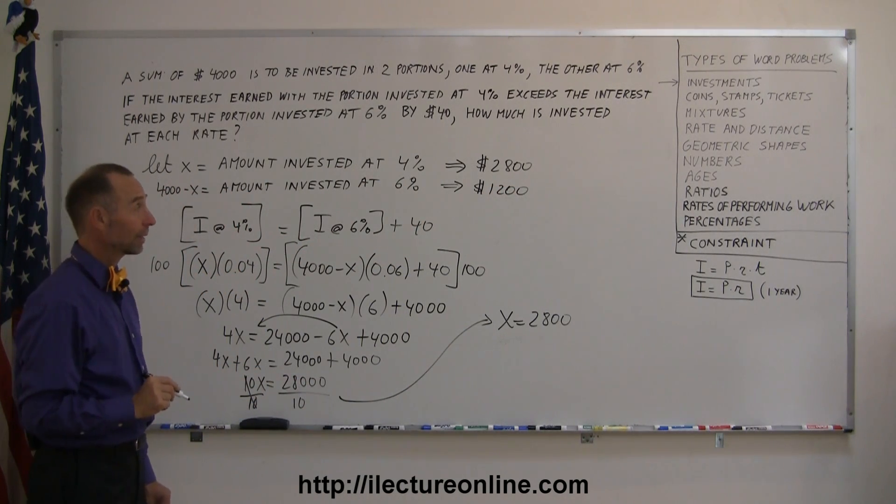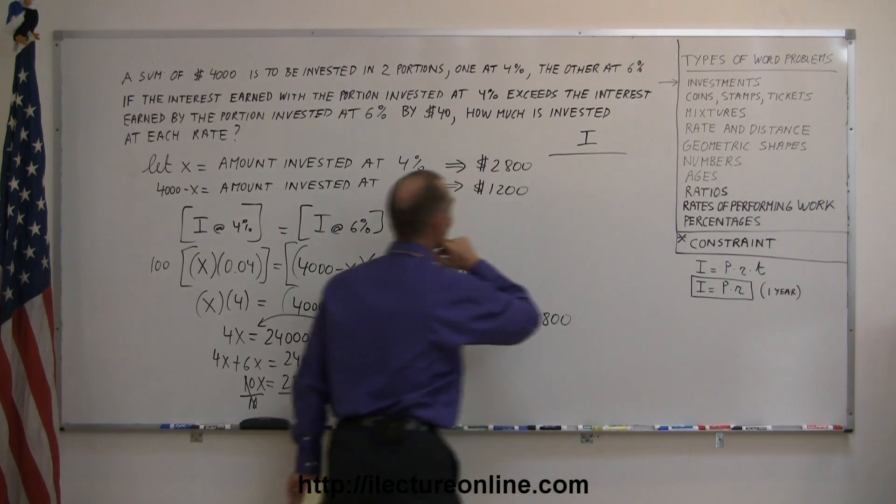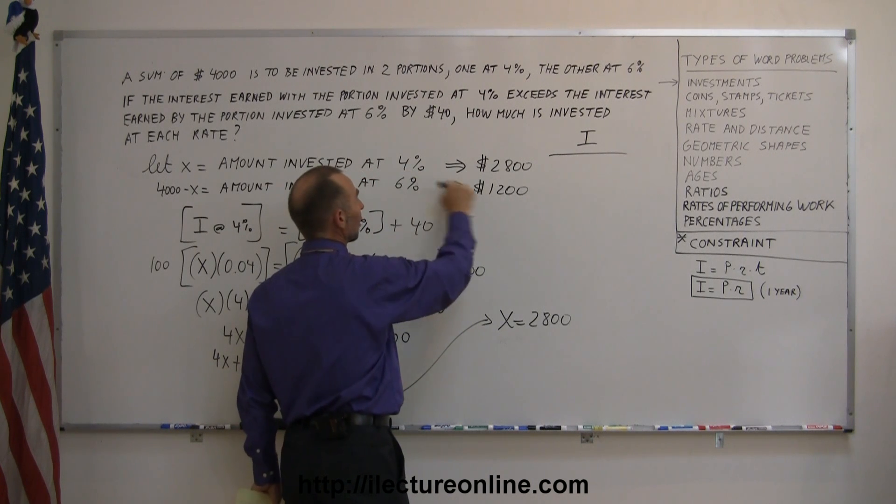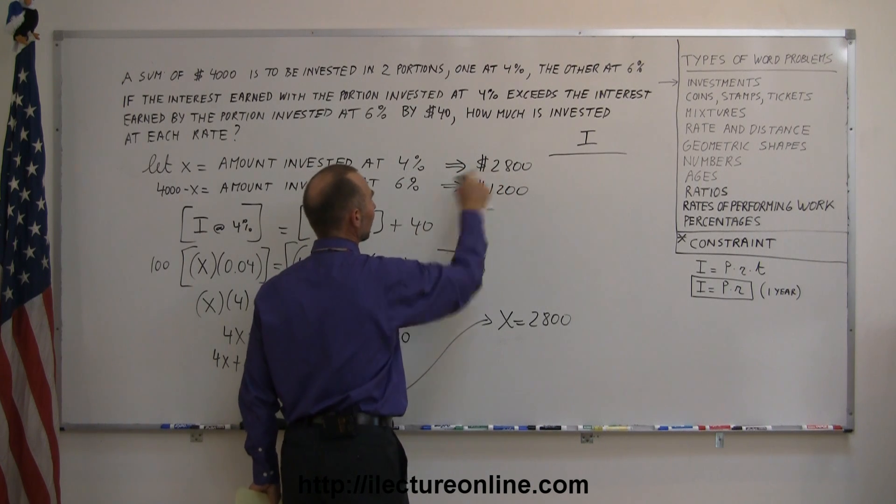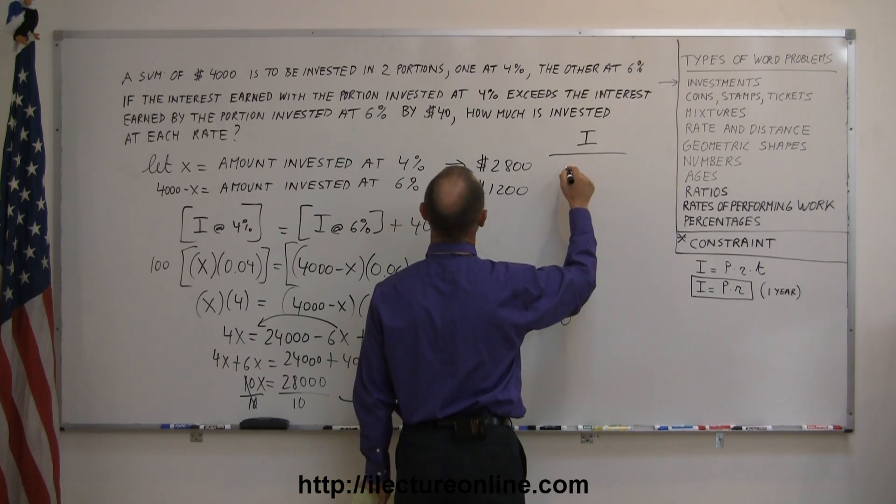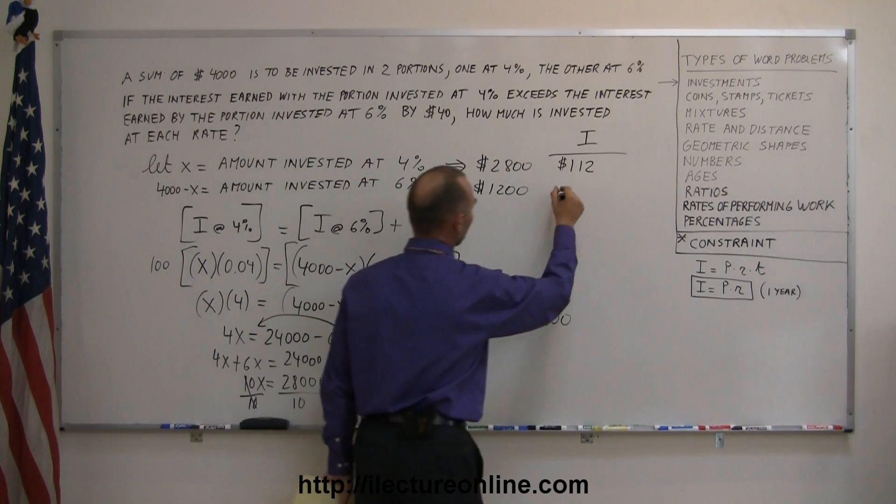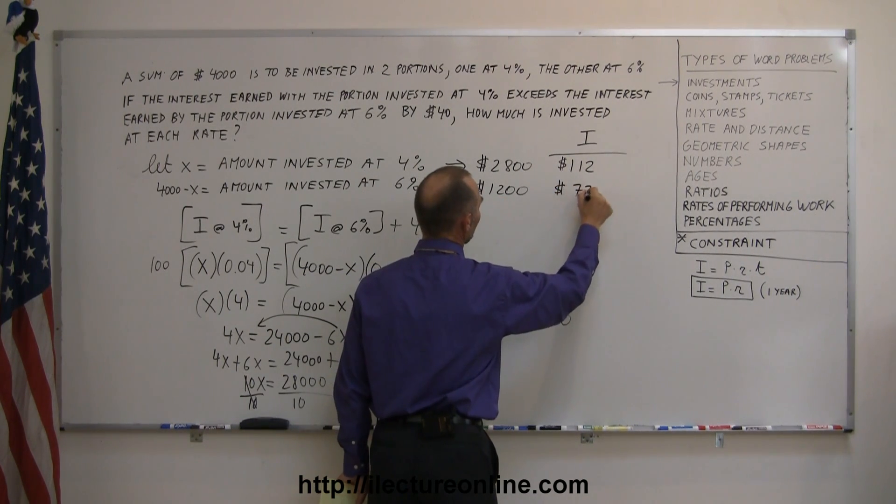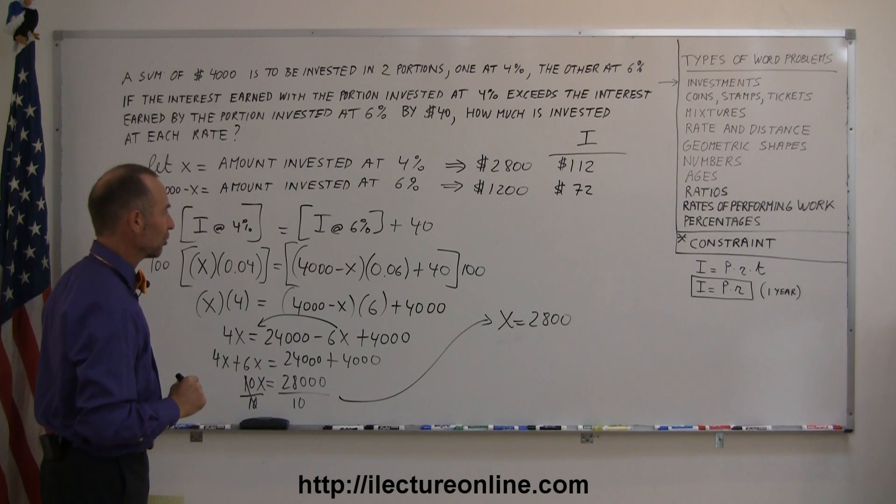Now, just to make sure we did this correctly, what we need to do is figure out how much we earned at each. At 4%, we invest $2800 at 4%, so if we multiply 4% times this, we get $112. And if we invest $1200 at 6%, we get $72. And the question is, is this $40 more than this? And the answer is yes, it is. Therefore, those are the correct answers, and that's how you do that problem.